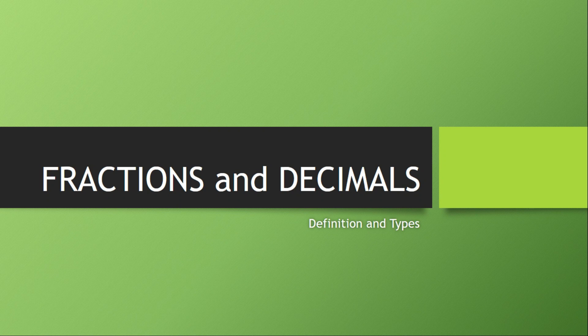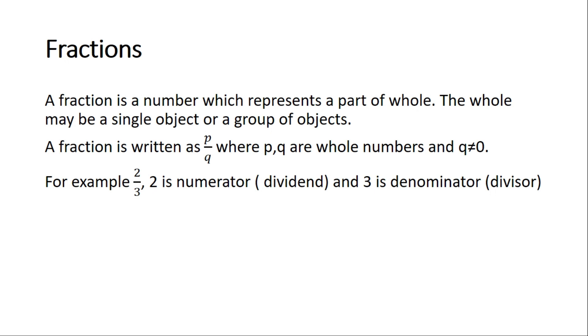Let us start the new topic: fractions and decimals. In this video we are going to learn some definitions and types. A fraction is a number which represents a part of a whole. The whole may be a single object or a group of objects. A fraction is written in the form P by Q, where P and Q are whole numbers and Q is not equal to 0. For example, in the fraction 2 by 3, 2 is the numerator, also called the dividend.